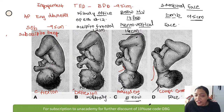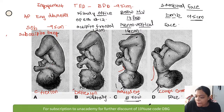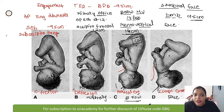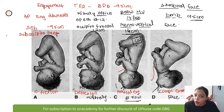Mentovertical is 14 cm and the mode of delivery for mentovertical (brow presentation) is caesarean section — we can never do vaginal delivery for 14 cm. Summary: complete flexion = SOB (9.5 cm); military position = occipitofrontal (12 cm); brow = mentovertical (14 cm, CS); face = submentobregmatic (9.5 cm).